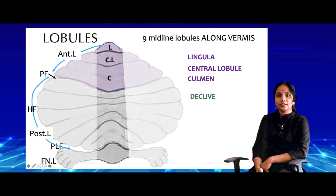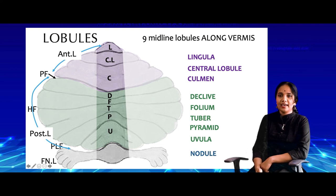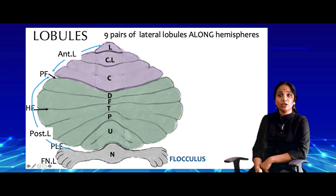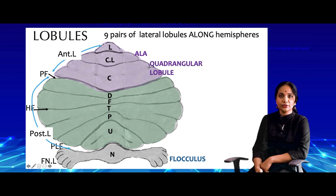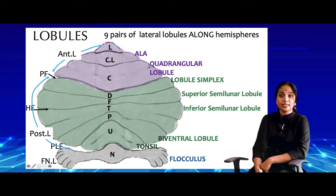The posterior lobe is further divided along the vermis into the declive, the folium, the tuber, the pyramid, and the uvula. In the flocculonodular lobe, the midline structure is the nodule. Laterally, the cerebellar hemispheres are also divided into nine pairs of lateral lobules. Only the lingula does not have a lateral counterpart. Along the central lobule is the ala; the culmen corresponds to the quadrangular lobule; the declive to the lobulus simplex; the folium to the superior semilunar lobule; the tuber to the inferior semilunar lobule; the pyramid to the biventral lobule; the uvula to the tonsil; and the nodule corresponds laterally to the flocculus.